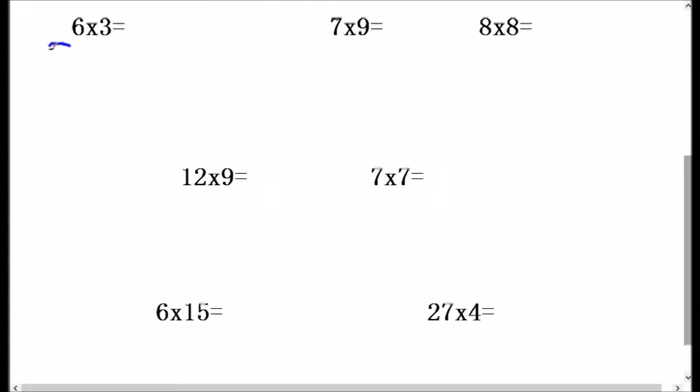This 6, I could either break it down into 5 plus 1. That's not bad. Or I could break it down into 3 plus 3. But either way, I'm multiplying both of those. I'm multiplying that times 3. So this ends up being 9 plus 9, which is 18.